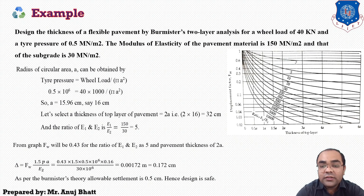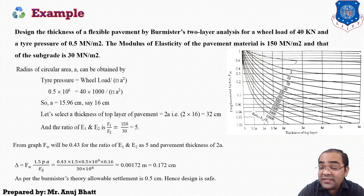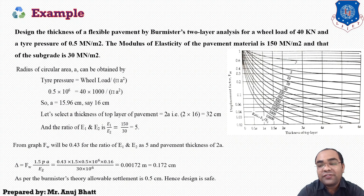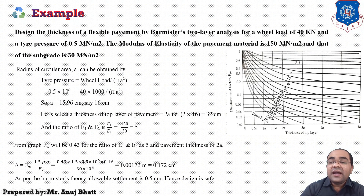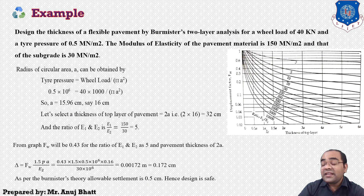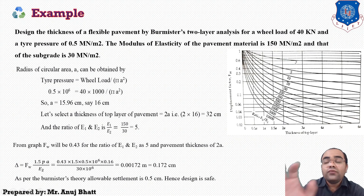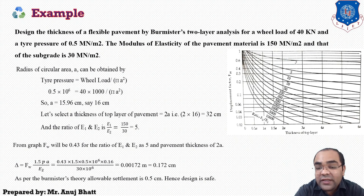Next, select a thickness for the top layer of the pavement. Here, a value of 2a is selected, making the top layer thickness 32 cm. This is not mandatory — you could select 1.5a or 3a — but 3a makes the curve approach a constant value, so generally 1.5a or 2a is taken. Whether this selected value is correct depends on the next iteration.